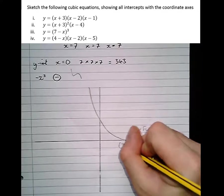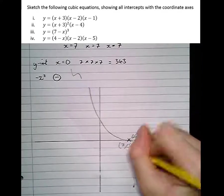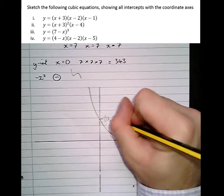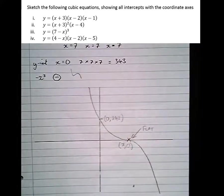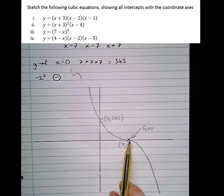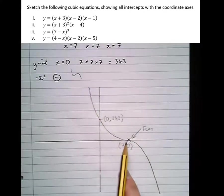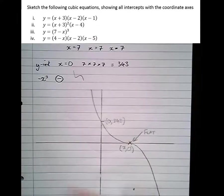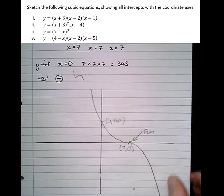So that's at 7, 0, and the Y-intercept is 0, 3, 4, 3. So the graph must go flat there for a triple root. So it looks like it's going to turn back on itself and go up, but actually then it changes its mind and goes down again. So that's that one. Then finally, last one, part 4.